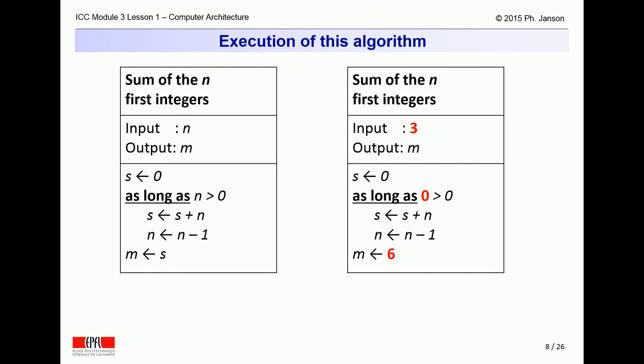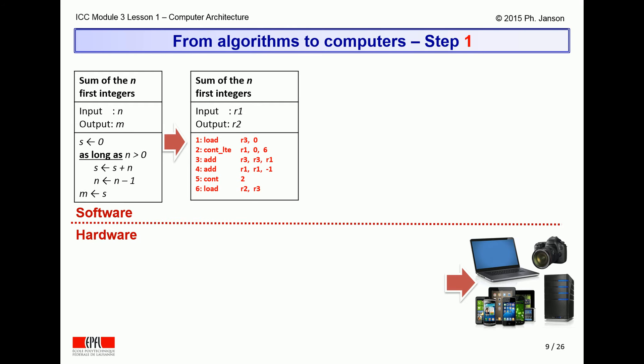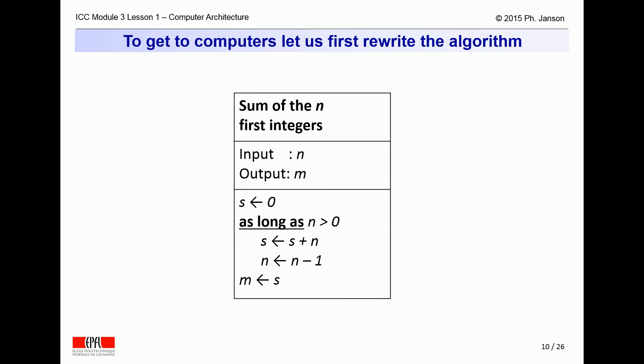Since n is now 0, the comparison 0 greater than 0 fails, so that the usual two operations are not executed once more. Instead, the algorithm skips them and directly assigns the value of s, which is now 6, to m, the final result. As suggested earlier, a computer is unable to understand an algorithm in this intuitive but informal language. Computers need algorithms to be expressed in languages more formal and rigid. So let us try to be concrete and see what a computer would need.